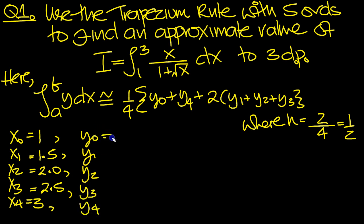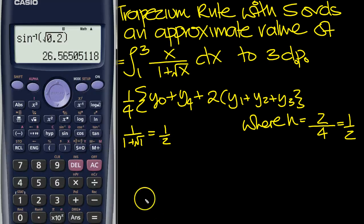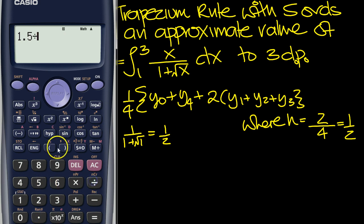And here's our y ordinates. We need to tap them in the calculator. So when x is 1, it's 1 over 1 plus root 1, which is a half. Then the next one is, so we'll tap the next one in a calculator. So it's 1.5 divided by bracket 1 plus the square root of 1.5. Come outside of the square root and close the bracket. So that's what we've got then.